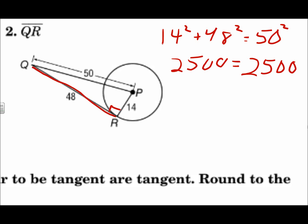So we do have a right angle. So segment QR is tangent to the circle. If the Pythagorean theorem works, then we have a right triangle, and we have a tangent.